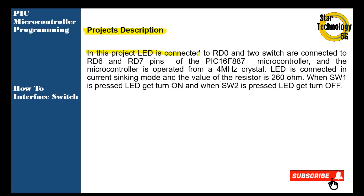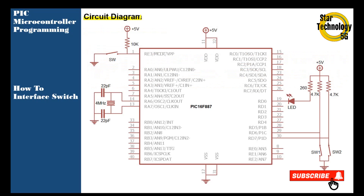Project description: In this project, an LED is connected to the RD0 pin, and two switches are connected to the RD6 and RD7 pins of the PIC16F877 microcontroller. The microcontroller is operated from a 4 MHz crystal. The LED is connected in current sinking mode, and the value of the resistor is 260 ohm. When switch one is pressed the LED turns on, and when switch two is pressed the LED turns off.